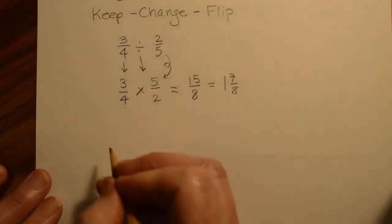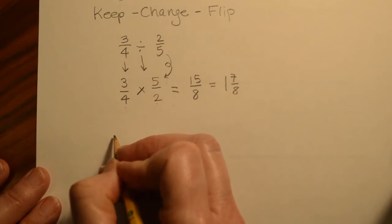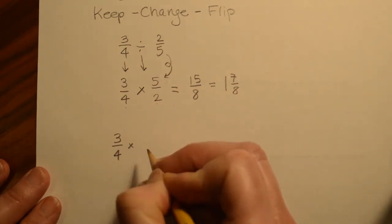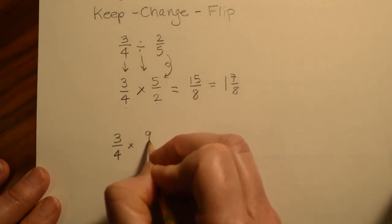All right, let's do another one. One where we might have to cancel first. So let's say instead of 3/4 times 2/5, this time we take 3/4 times, let's say, 9/16.